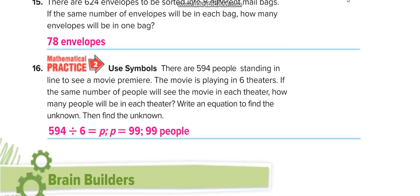There are 594 people standing in line to see a movie premiere. The movie is playing in 6 theaters. So 594 divided by 6. They write it as unknown because the question said write an equation to find the unknown, then find the unknown. The unknown is p. When you divide it, you get 99 people in each theater.